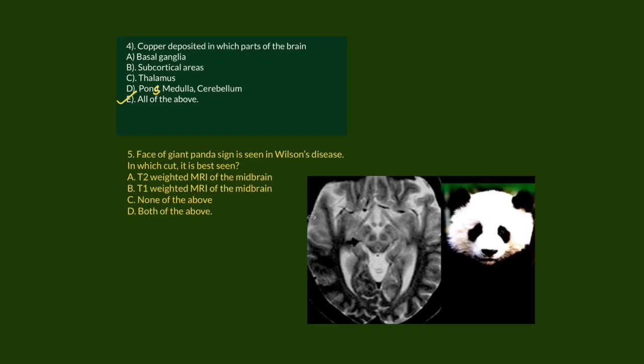MCQ 5: The 'face of giant panda' sign is seen in Wilson's disease. In which imaging cut is it best seen? The face of giant panda sign shows two eyes and a small mouth representing the midbrain. This is also called the double panda sign or face of giant panda sign of Wilson's disease. It is best seen on T2-weighted MRI of the midbrain.